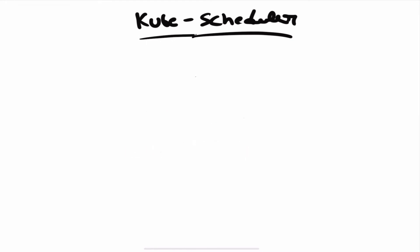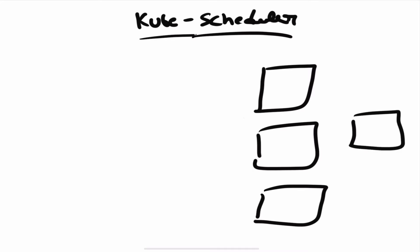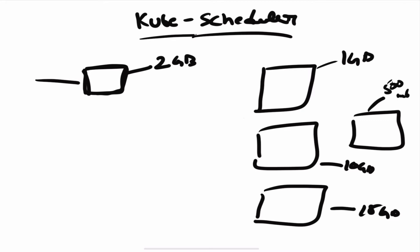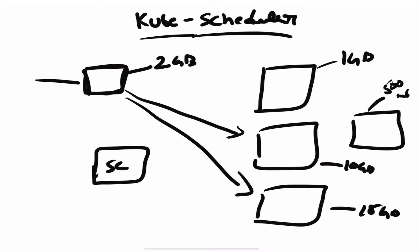Here's an example. Suppose we have four worker nodes: one with 1 GB of memory, one with 10 GB, one with 15 GB, and one with 500 MB. I want to run a pod that requires 2 GB of memory. The first thing the scheduler does is filtering — it goes through all the available worker nodes and filters out the ones that can actually accommodate the pod. In this case, only the 10 GB and 15 GB nodes pass the filter; the 1 GB and 500 MB nodes are out of competition.